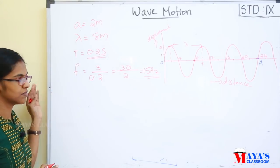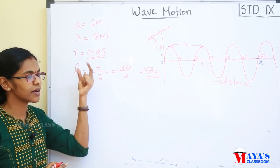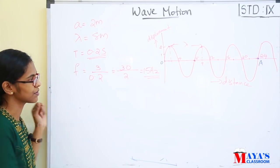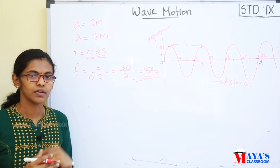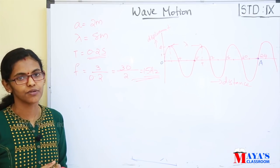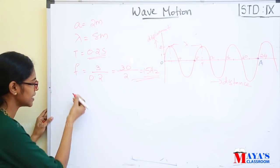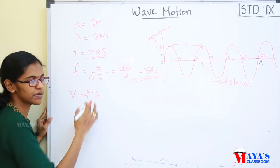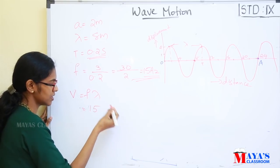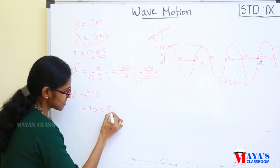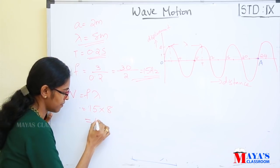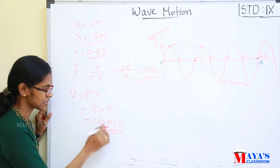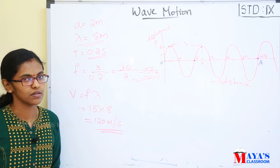The frequency of this wave is 15 Hz. Next, we have the speed of the wave. Speed of the wave is equal to frequency multiplied by wavelength — that is 15 multiplied by 8 — equal to 120 meters per second. The unit of speed is meters per second. Therefore, speed of the wave is 120 meters per second.